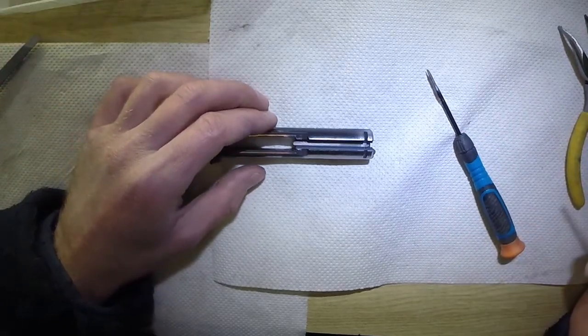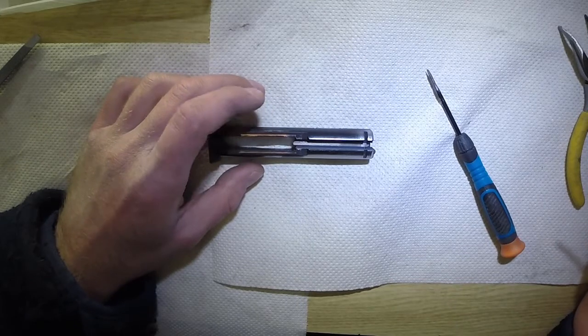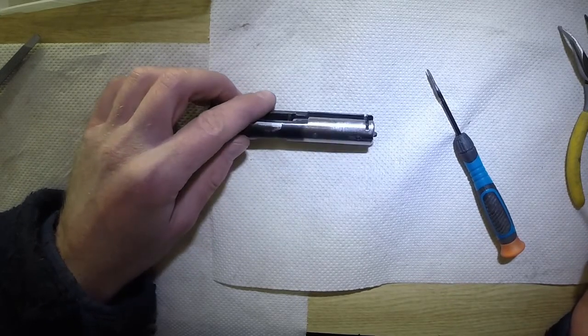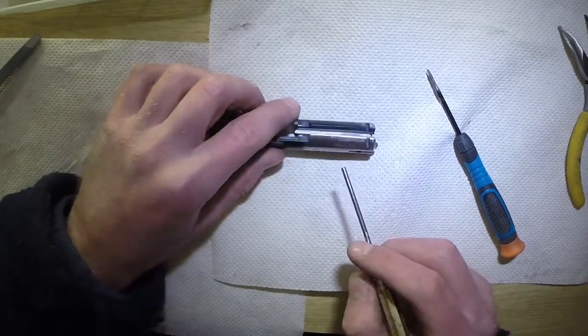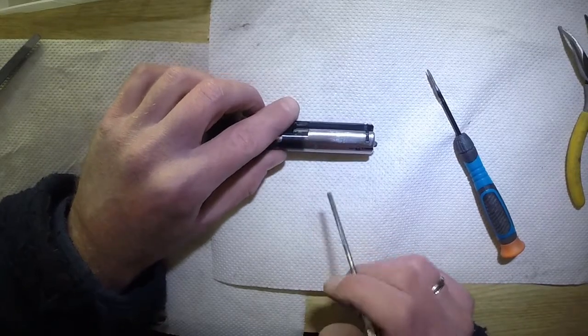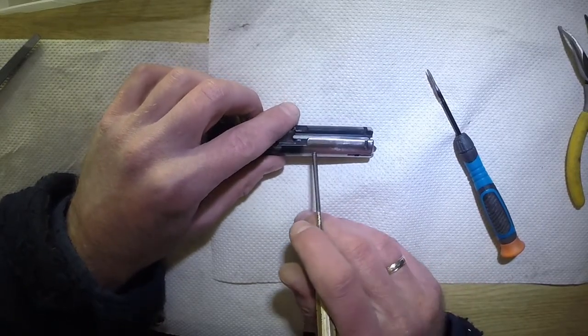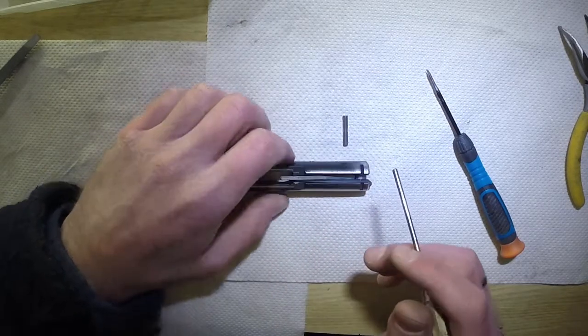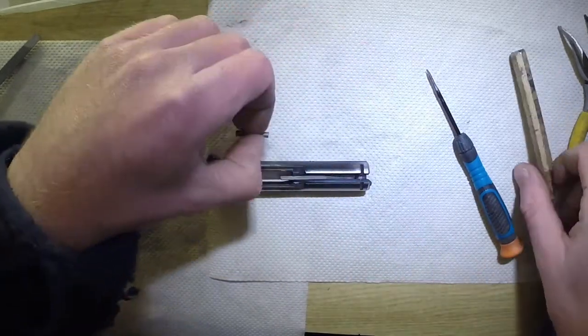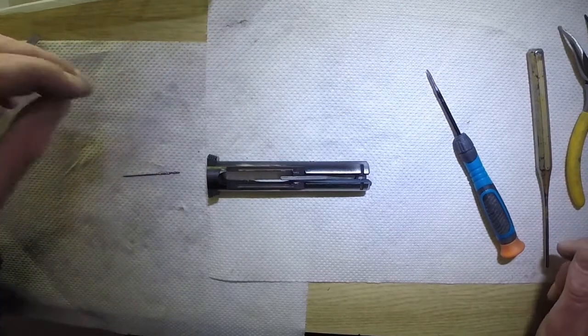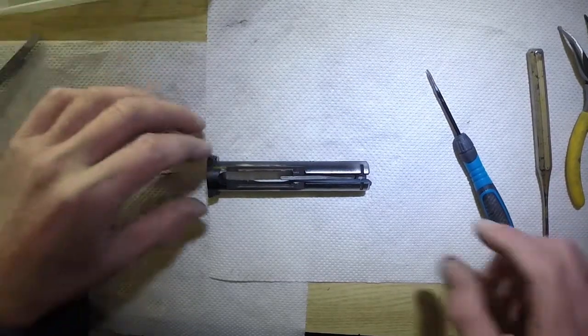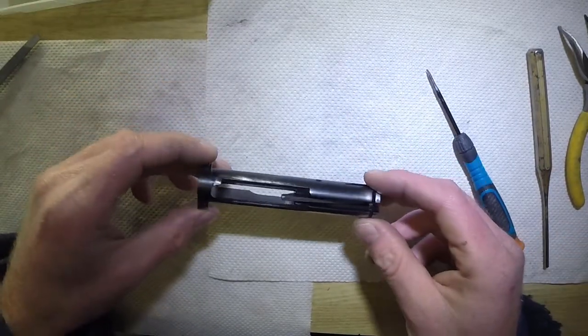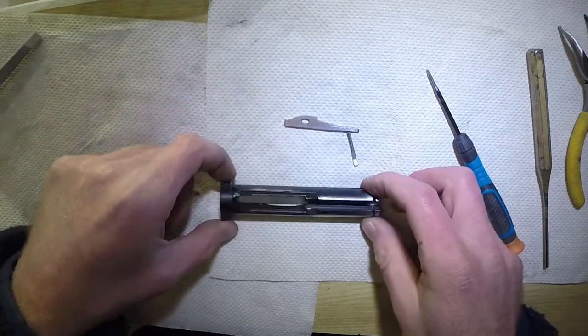Now we're going to get the firing pin out, the rebound spring, and the rebound spring support out. It is really simple. All you need to do is push out the firing pin stop, which releases the tension from the rebound spring. Then just turn the bolt around and everything falls out.